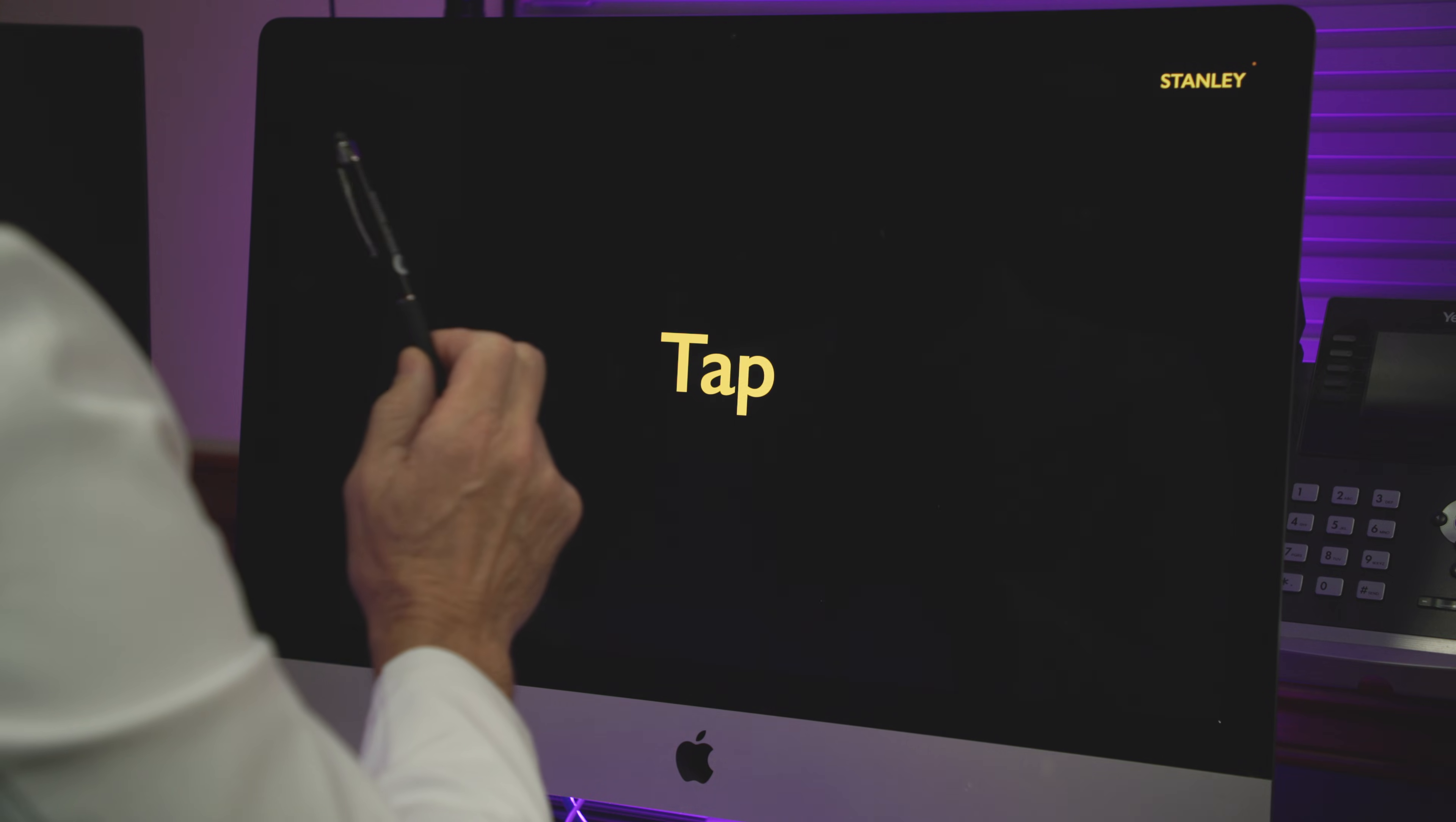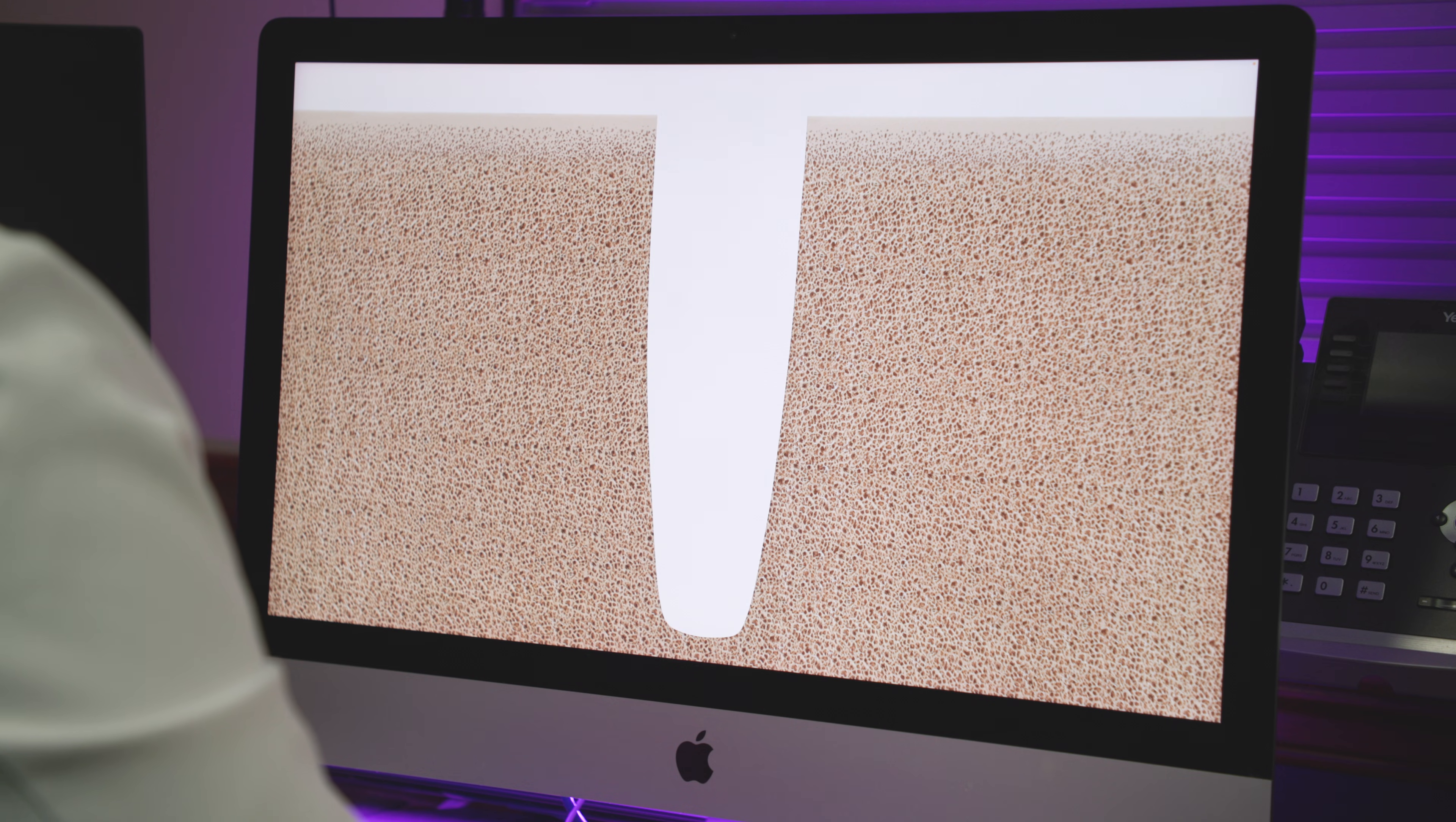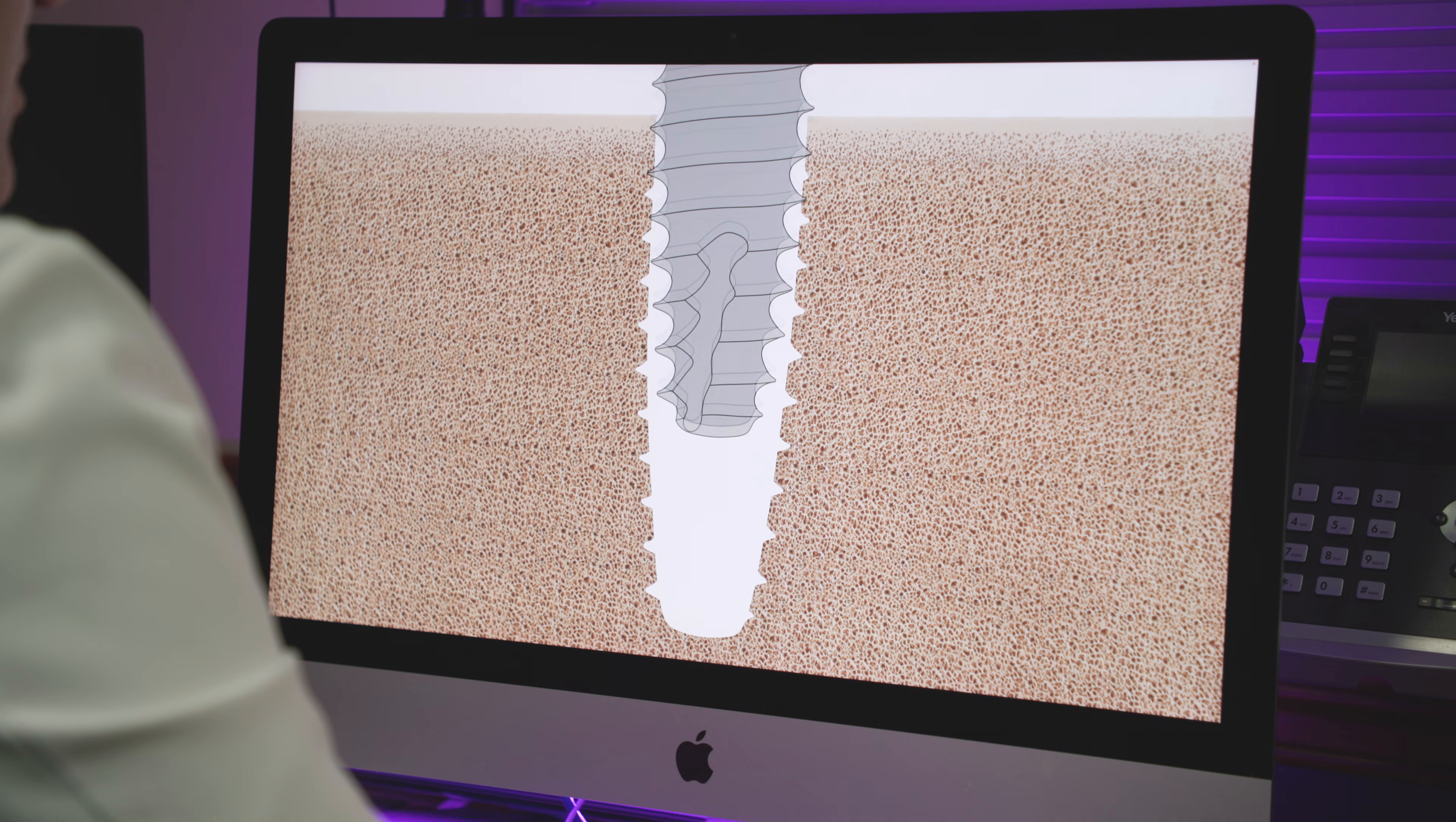If we go to the second example of how we would potentially do an implant, we could use a tap. The way a tap works is you drill the hole, and you insert a special tool that kind of looks like an implant, but it actually cuts the grooves inside the bone. Now, when we go back to place the implant, the threads of the implants are going to engage these pre-cut grooves in the bone. So the implant goes in in this case.